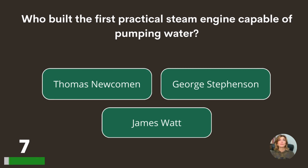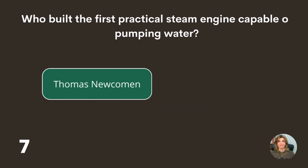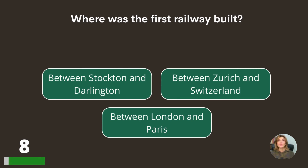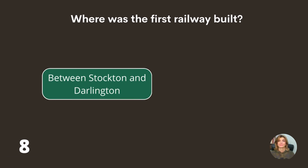Who built the first practical steam engine capable of pumping water — Thomas Newcomen, George Stevenson, or James Watt? Thomas Newcomen. Where was the first railway built — between Stockton and Darlington, between Zurich and Switzerland, or between London and Paris? Between Stockton and Darlington.